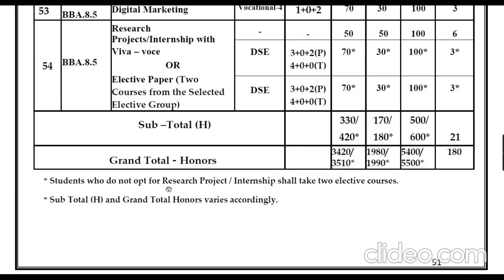Students who do not opt for the research project or internship shall take two elective courses instead. If a student chooses internship, they will have 100 marks for internship. If a student chooses two elective papers instead, they study for 100+100 = 200 marks. Credits remain the same but marks differ: internship students get a total of 5400 marks, while elective-paper students get 5500 marks for four years.